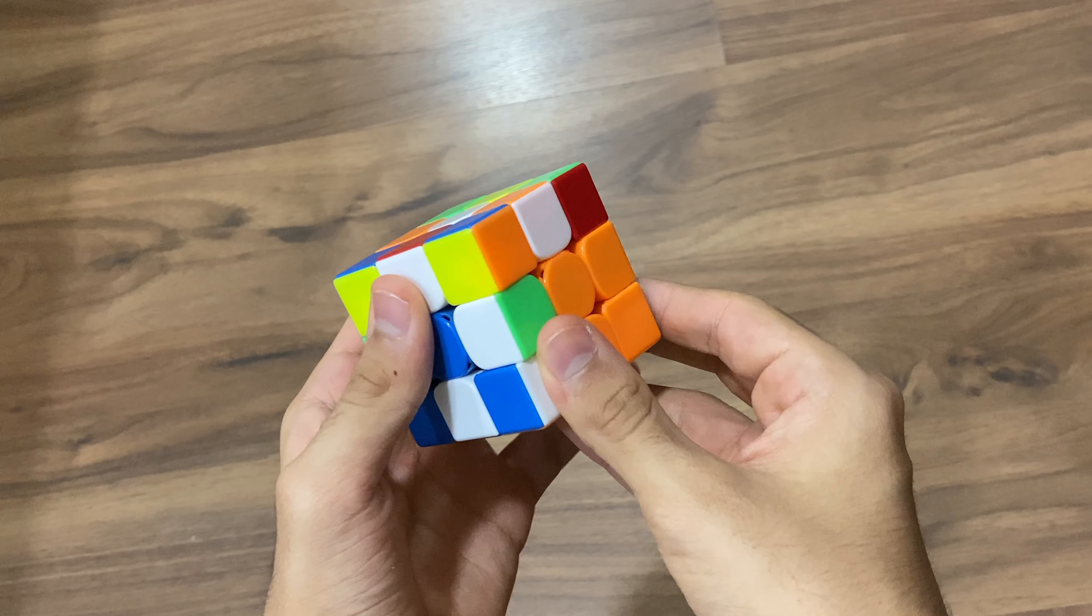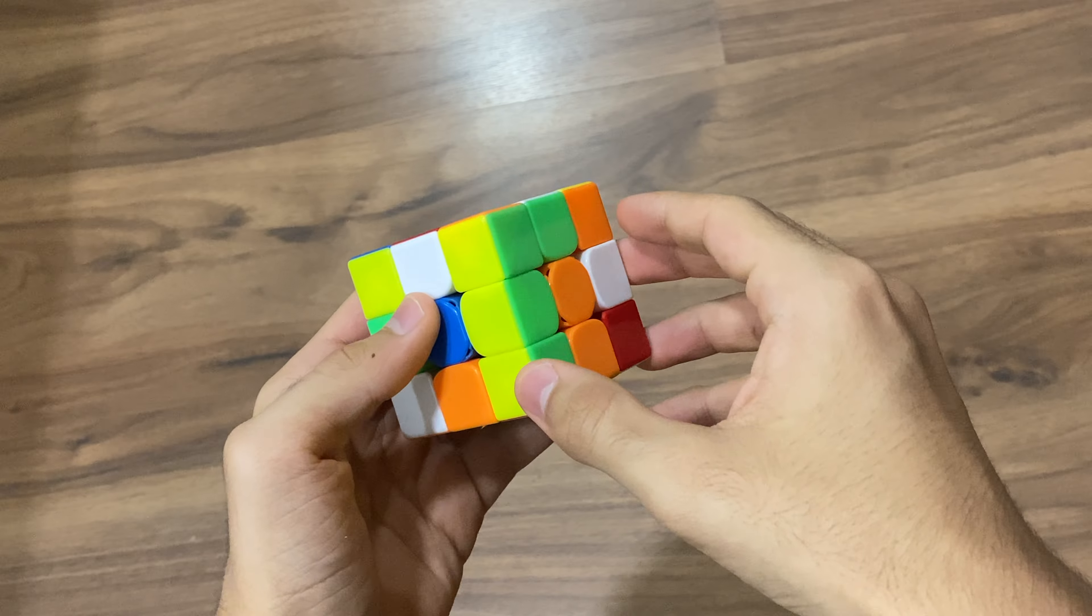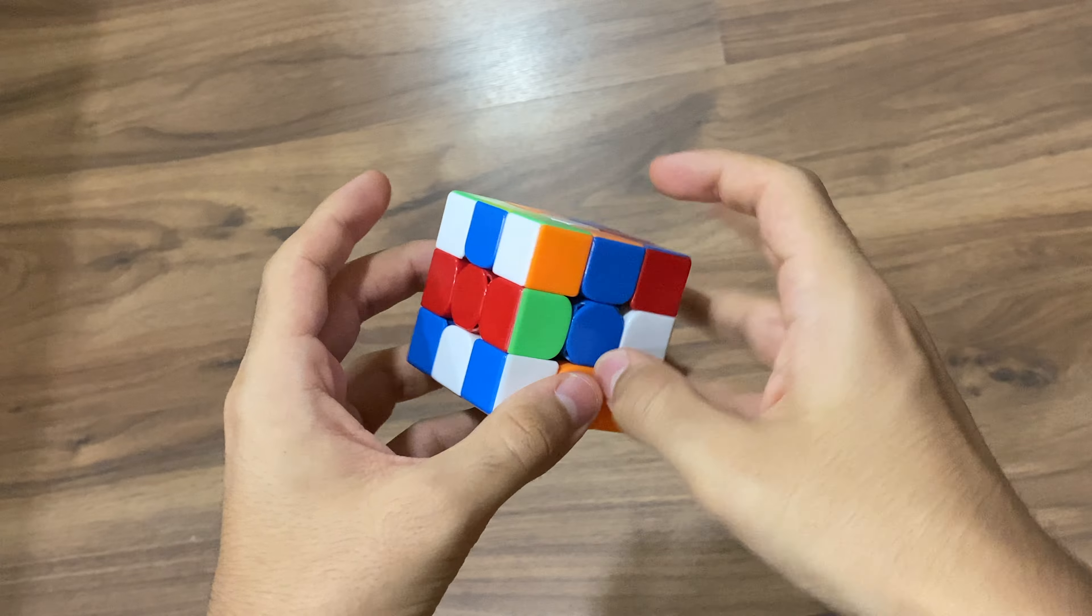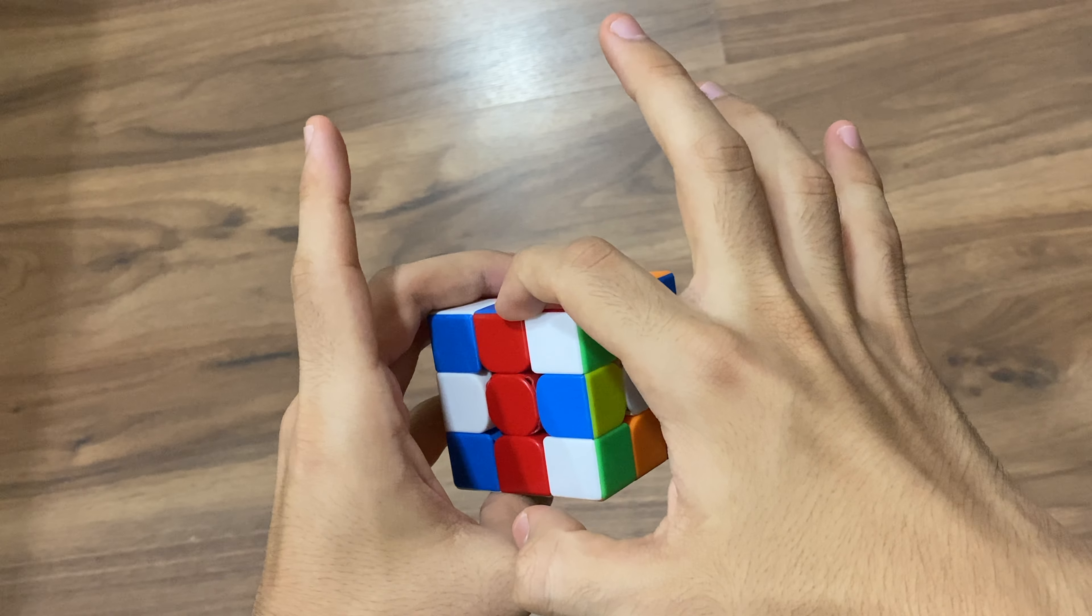When you move it into place here, this pair in the back right is going to be solved. But once you insert this, this corner is also solved, and then when you do a U prime this edge will get solved here when you do an L2.